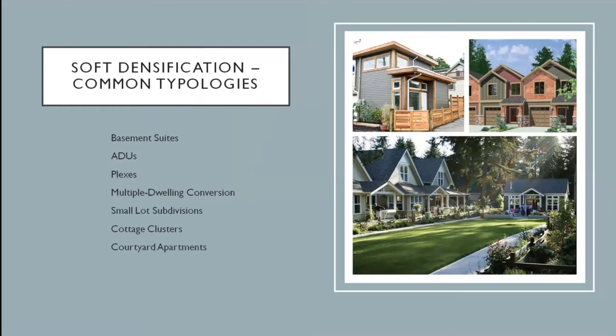These are housing typologies that can generally be built on one or two lots. At the smallest scale we see basement suites or accessory dwelling units such as laneway houses or backyard cottages. At the higher end of the density scale, you get plexes, cottage clusters, or courtyard apartments — small sets of cottages or two-to-three storey apartment buildings of maybe five, six, or seven units, built in a U-shape around an interior green space courtyard.